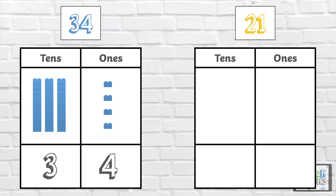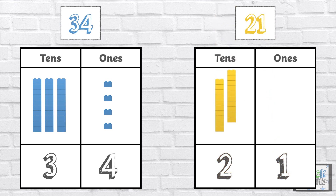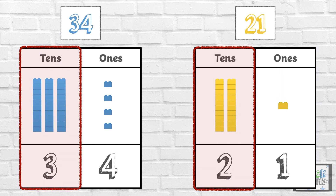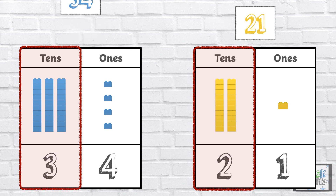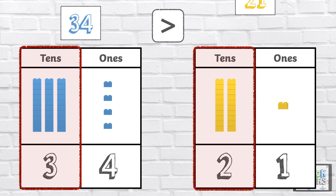The number 21 has two 10s and one 1: 10, 20, 21. When we compare numbers, we look at the 10s digits first. Three 10s is greater than two 10s, so 34 is greater than 21.